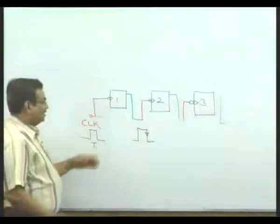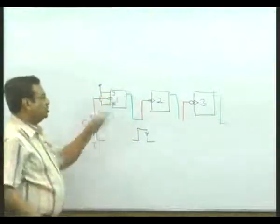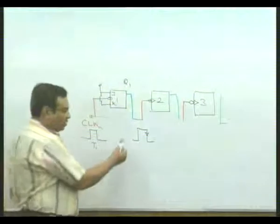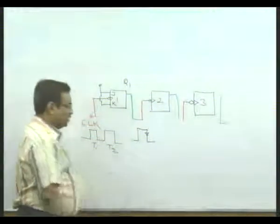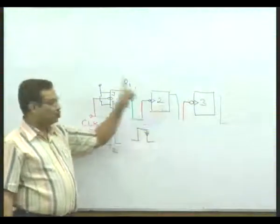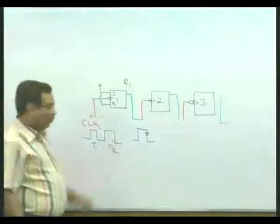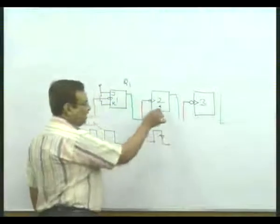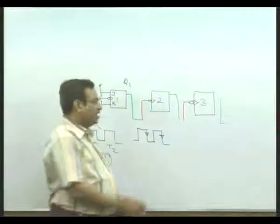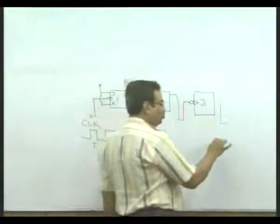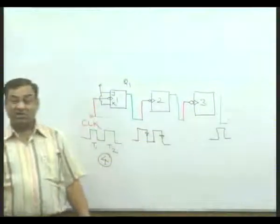Depending upon the input connected to JK inputs, output Q1 will be produced. Q1 may change from low to high; during the next clock it comes down. When there is another clock finishing the work, one clock is given to two flip-flops. So for the second JK flip-flop, clock count is one; for the first, it is two. Every time the clock count is reducing by two.